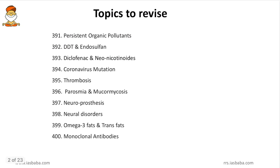The hot topics we are going to discuss are: persistent organic pollutants, DDT and endosulfan and their ill effects, then diclofenac and neonicotinoids, then coronavirus mutation, then thrombosis, then parosmia and mucormycosis in the wake of COVID-19, then neuroprosthesis, neural disorders like Parkinson's disease, Huntington's disease, etc., then omega-3 fatty acids, trans fats, and monoclonal antibodies.